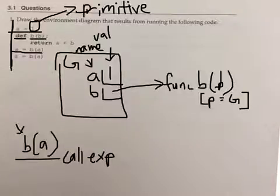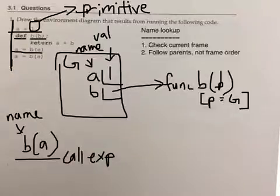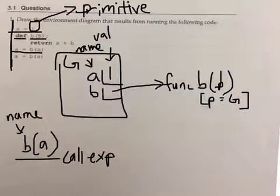The operator is B, which is a name, and how do we resolve names? Well there are rules for that too: name lookup. We check the current frame, and if it's not in the current frame then we follow the parents until we hit the global frame. In this case the global frame has the name B, and so we can just say that B is that function object over here.